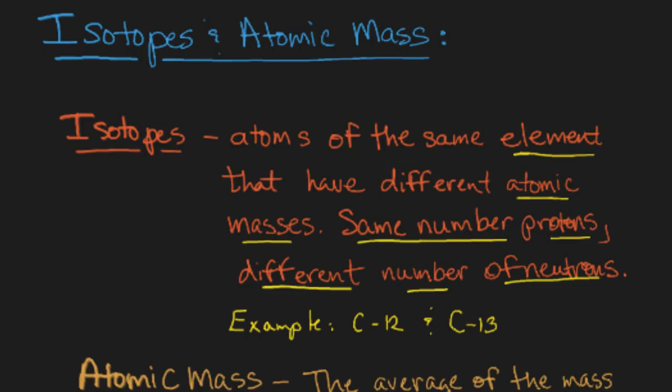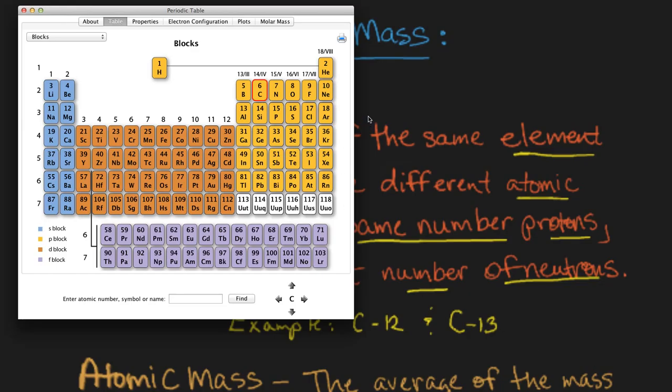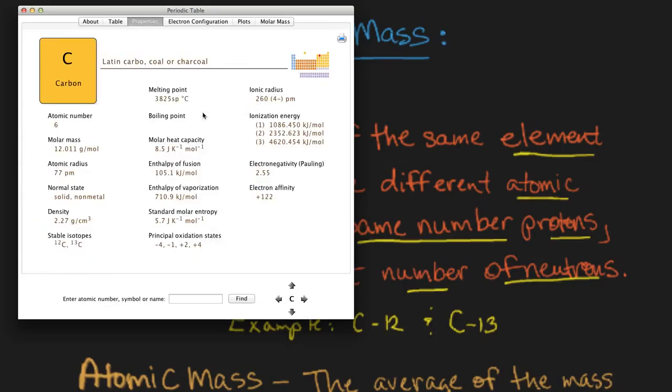What we see when we look on this periodic table here is an average of those atomic masses. That 12.011 there is taking into account the fraction of the carbon-12 times the mass of 12 plus the fraction of the carbon-13 times the mass of 13. As you can see, the proportion is drastically in the favor of carbon-12. That's what allows us to get that average atomic mass.